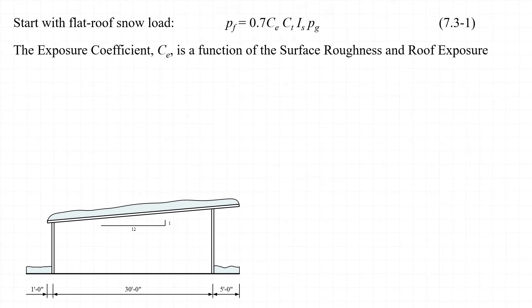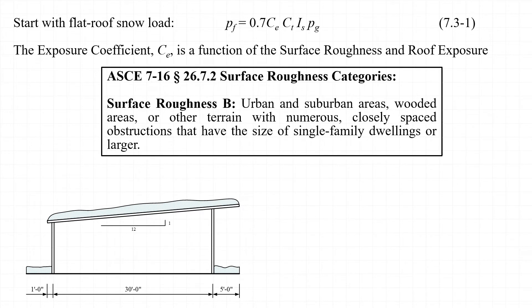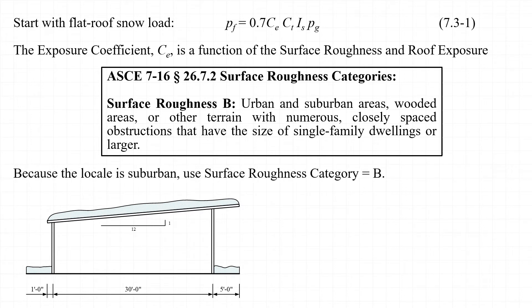The first coefficient in the equation is the exposure coefficient, C sub e, which is a function of the surface roughness at the site and the exposure conditions for the roof. Chapter 7 references Chapter 26 for surface roughness. Since the garage is in a suburban environment with only one nearby obstruction, we will use a surface roughness category B.